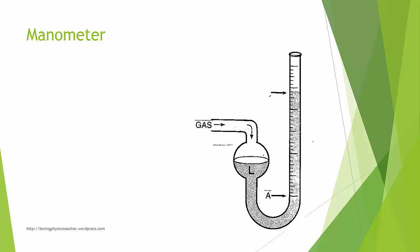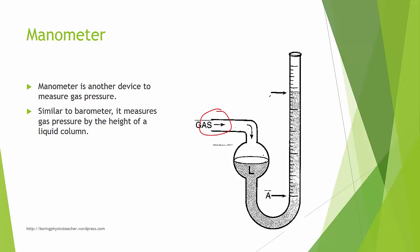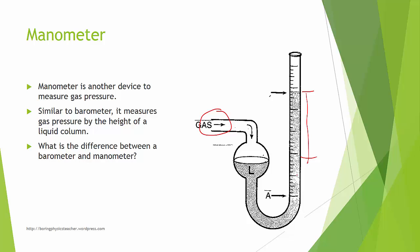This is a diagram of a manometer. It's another device to measure gas pressure. Similar to a barometer, it actually measures gas pressure by the height of the liquid column. But what is the difference between a barometer and a manometer?